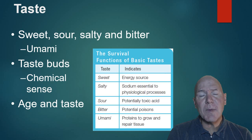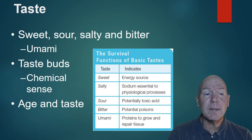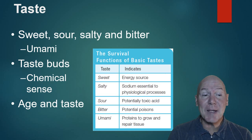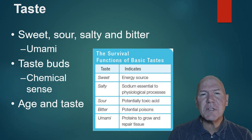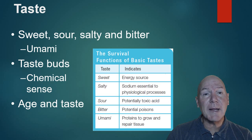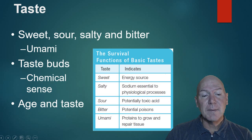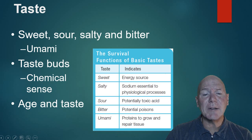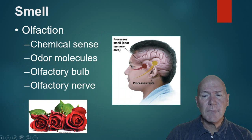Taste and smell are chemical senses. We have five basic tastes: sweet, sour, salty, bitter, and umami — the most recently added. We have taste buds visible on the tongue as small clusters. Taste declines as you get older. Umami is described as a savory flavor — people describe it as like fresh chicken.